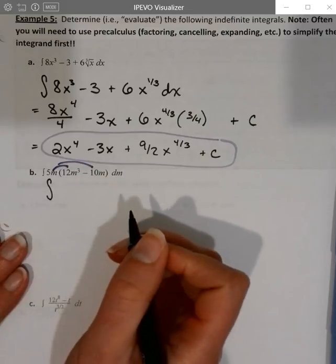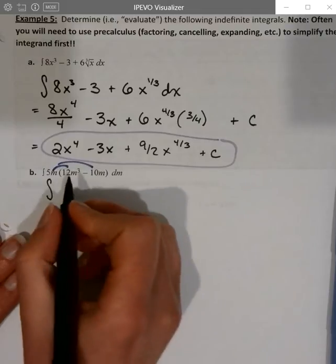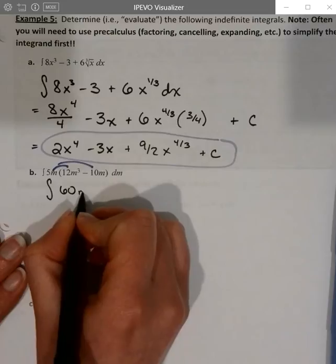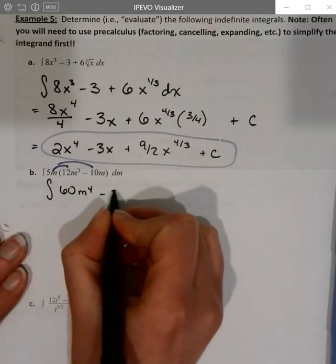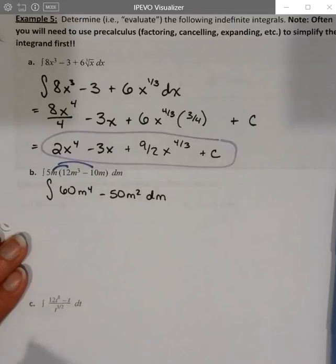So instead, let's multiply this out. 5 times 12 is 60m to the 4th minus 50m squared dm.